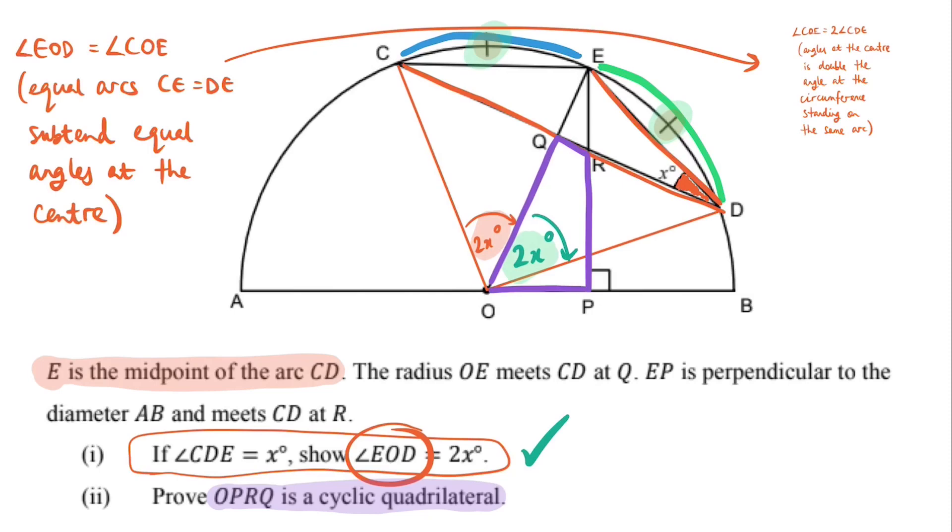So, there's my shape, OPRQ, and to prove that it is indeed cyclic, what I need to do is think in two directions. Number one, if it's a cyclic quadrilateral, that's what I want to prove. What I want to have in my mind is, what do I know about cyclic quadrilaterals? What properties does a cyclic quadrilateral have? Because if I want to prove that it's cyclic, I need to show that OPRQ exhibits some of the properties that a cyclic quadrilateral is supposed to have.